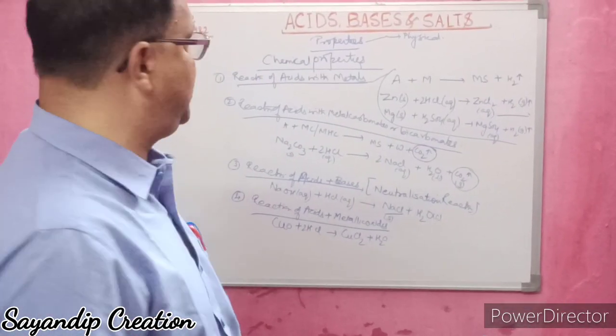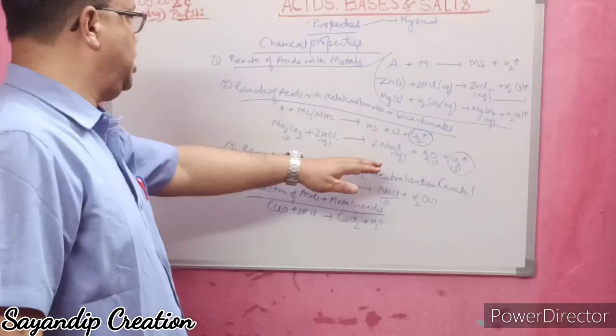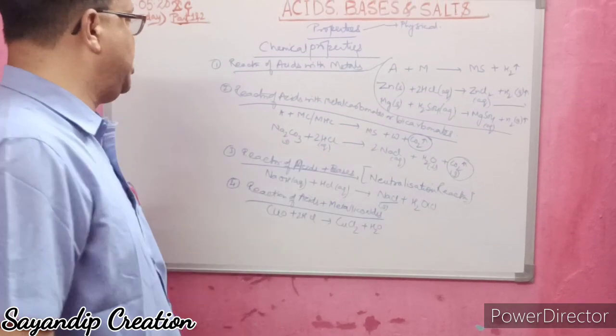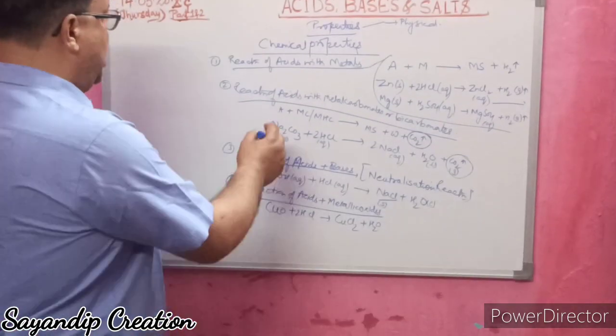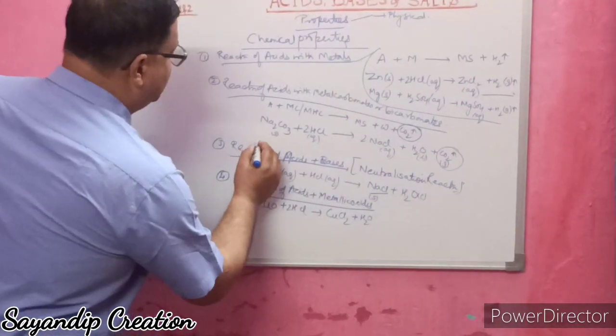So to recap the four chemical properties: reaction of acid with metal gives metal salt and hydrogen gas; reaction with metal carbonates or bicarbonates gives metal salt, water, and CO2; reaction with bases gives a neutralization reaction producing salt and water; and reaction with metallic oxides gives metal salt and water.